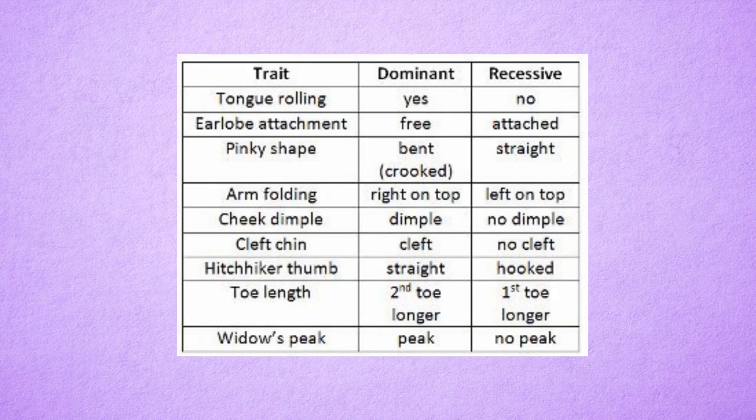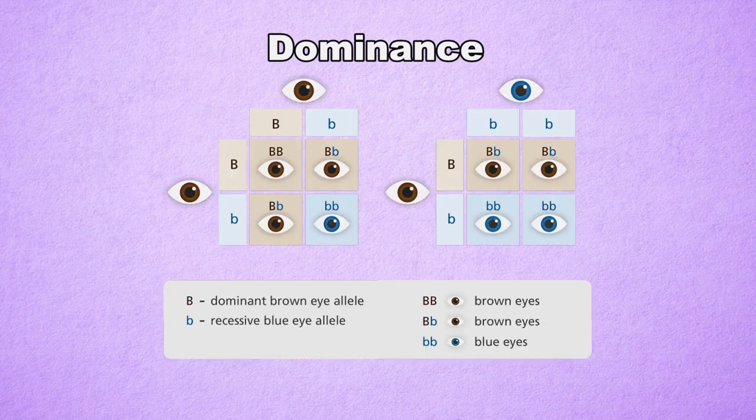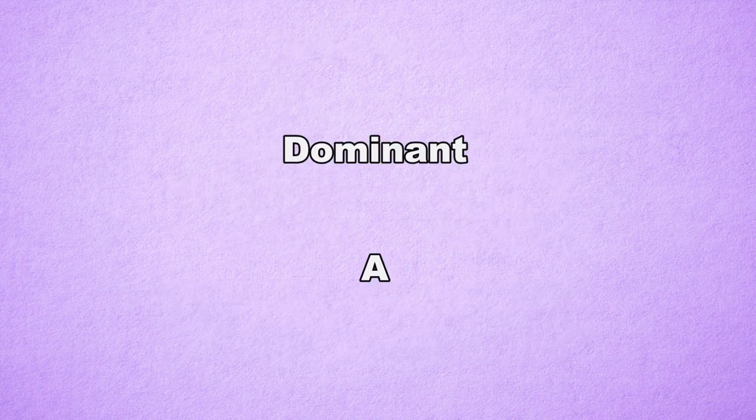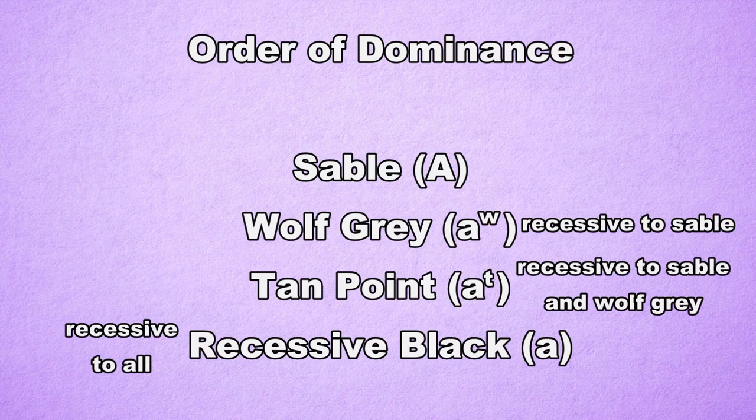Every dog carries two alleles at each locus. Only one of these alleles is generally expressed. Which allele is expressed depends on dominance. The most dominant allele will always be the one expressed in the phenotype. A recessive allele is one with less dominance. Dominant alleles are generally written with a capital letter; recessive alleles are written with a lowercase letter. Sometimes there is more than one dominant or recessive allele in a locus. When this happens, there is usually an order of dominance, so one dominant allele is more dominant than the other, and one recessive allele is more recessive than the other.